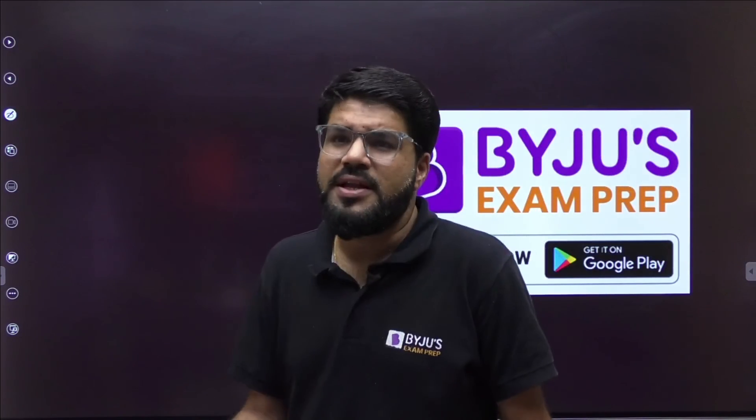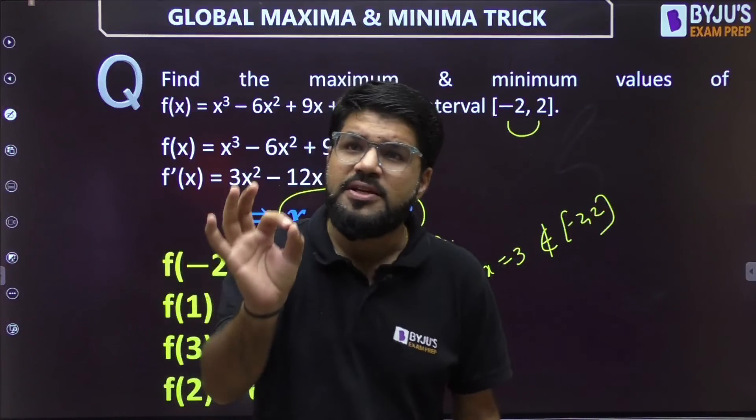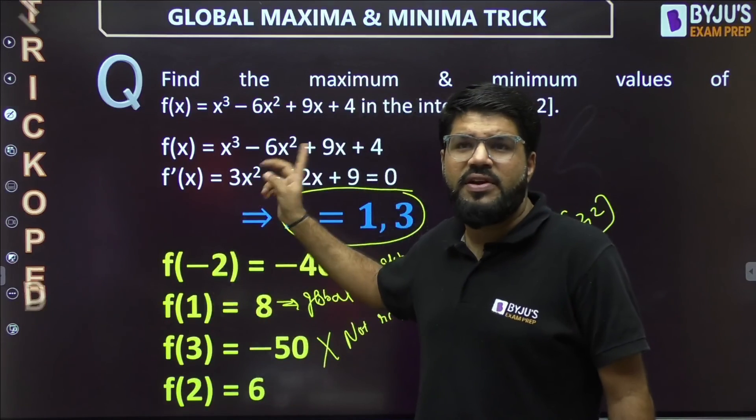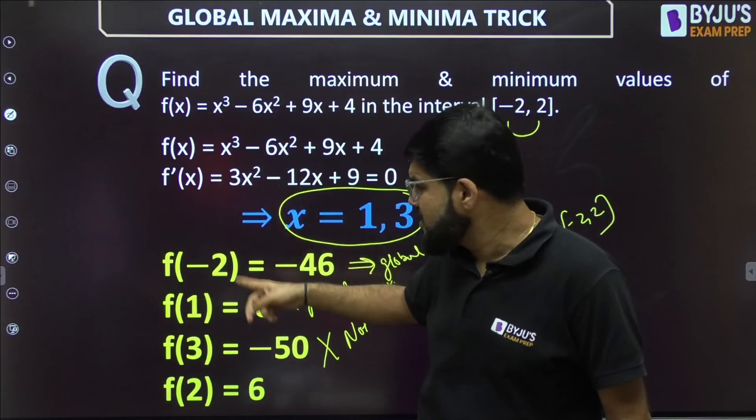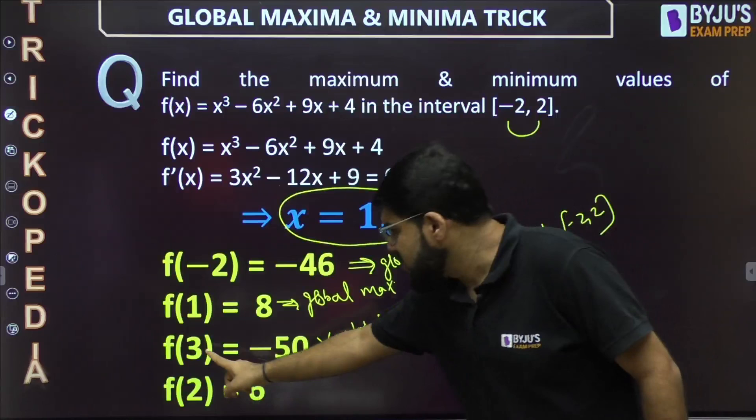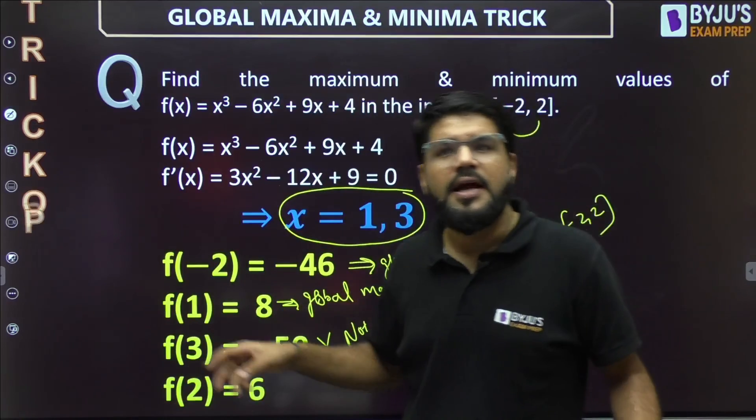I hope you have understood this very simple trick, and this is a very important two-marker producing question in GATE. Please note down: two-marker producing question in GATE. You can solve: first derivative equal to 0, calculate the stationary points, calculate the value of the function at the end points and at the stationary points. Look into the fact that stationary point should be within the range. Otherwise, discard it immediately. That's it.